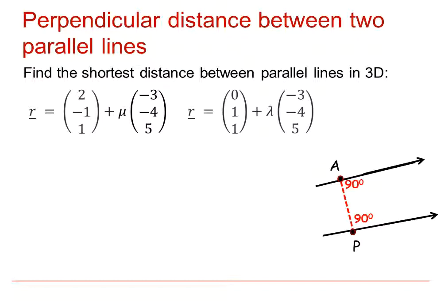The key thing in this problem is to look at the direction vectors. The direction vectors will be identical or one will be a scalar multiple of the other. Either way, the shortest distance between parallel lines will be perpendicular to both straight lines, as we can see in the diagram.